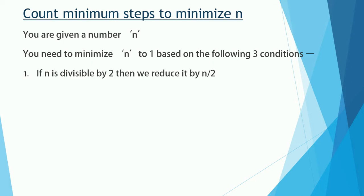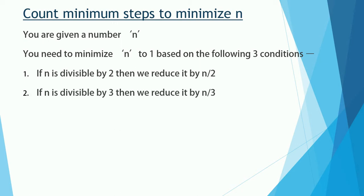Condition number 1: if N is divisible by 2, then you can reduce it to N divided by 2. Condition number 2: if N is divisible by 3, then you can reduce N to N divided by 3. Else, you can always decrement N by 1 — that means you can subtract 1 from N until it reaches 1.